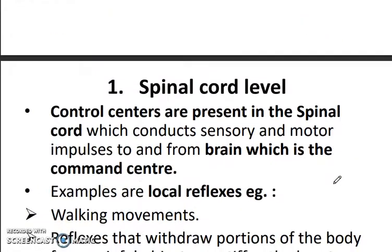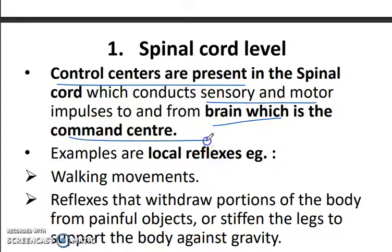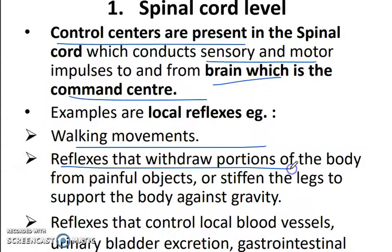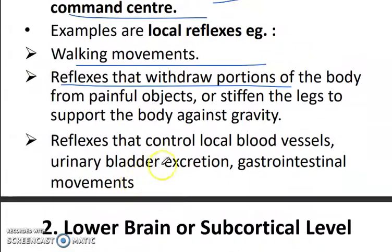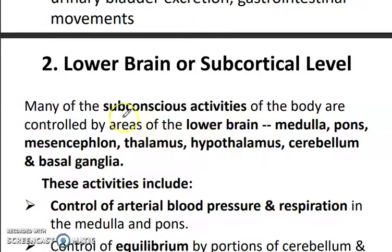The major levels are: spinal cord, lower brain, and higher brain. At the spinal cord level, control centers conduct sensory and motor impulses from the brain. Local effects include walking movements, reflexes that withdraw portions of the body, and reflexes that control local blood vessels.